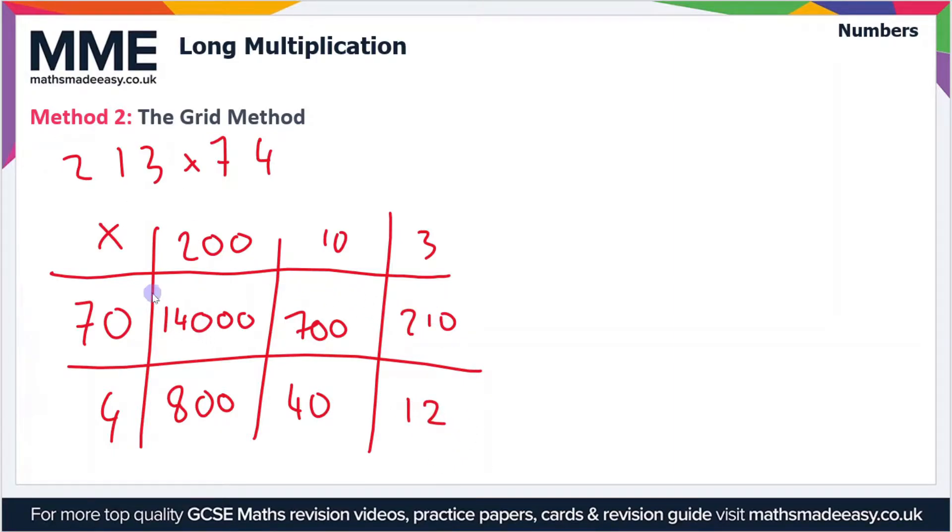Now we've got 14,000 plus 800 plus 700 plus 40 plus 210 plus 12. If we go through each of these columns, we'll start on the right. This column sums to 2 because there's only a 2 in this column and the rest are zeros. Then we've got 4 plus 1 plus 1, which is 6. We've got 8 plus 7, which is 15, add 2 which is 17. We'll carry the 1.